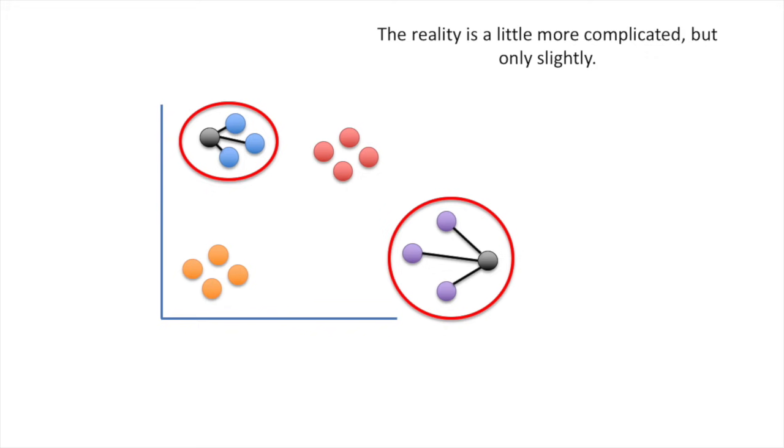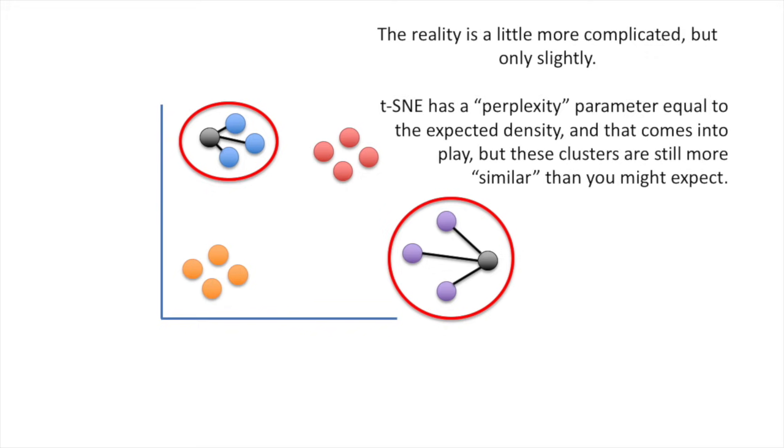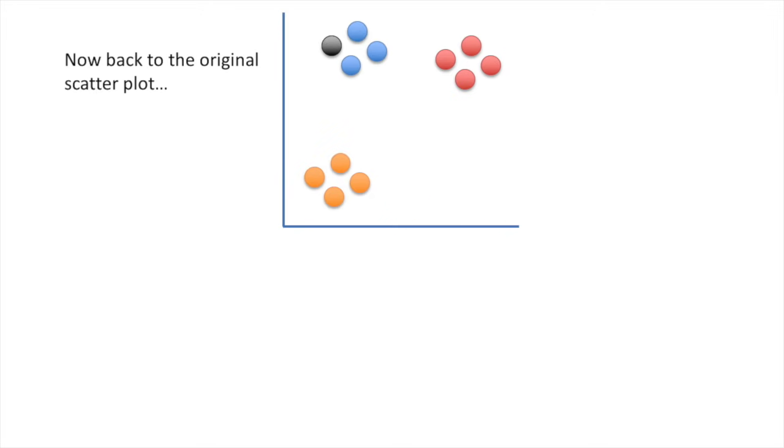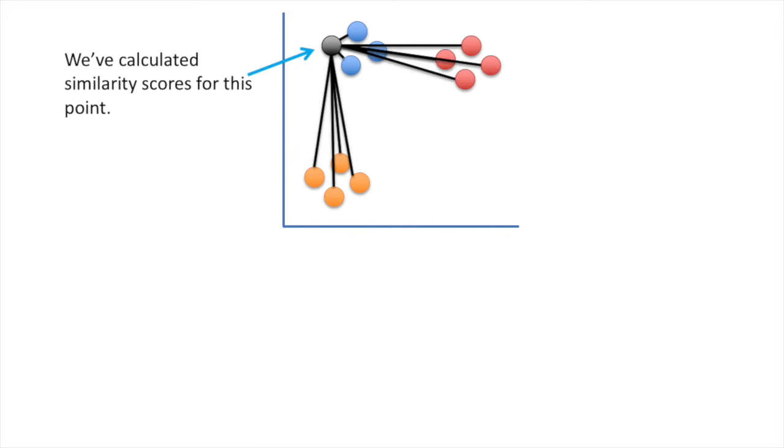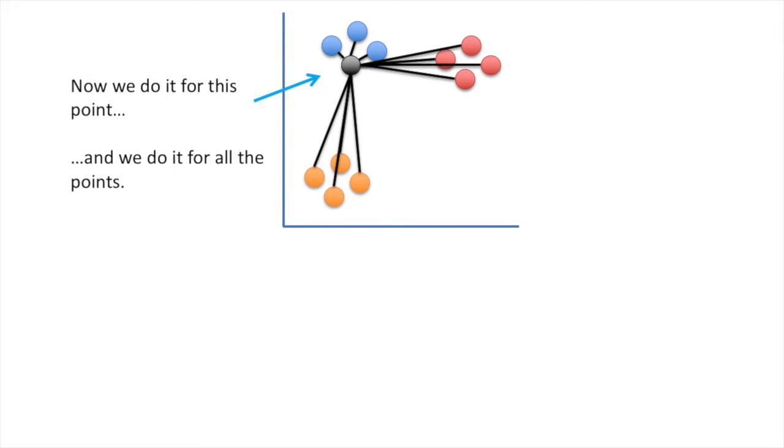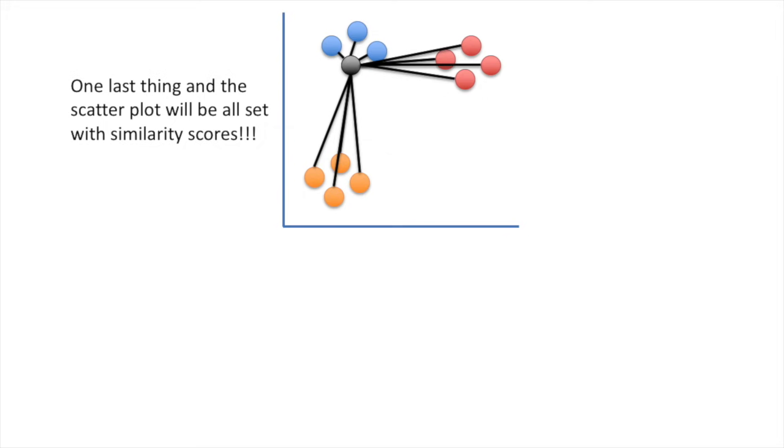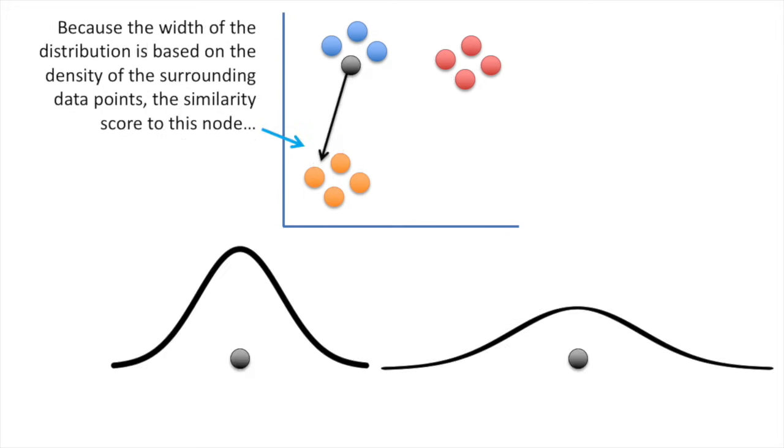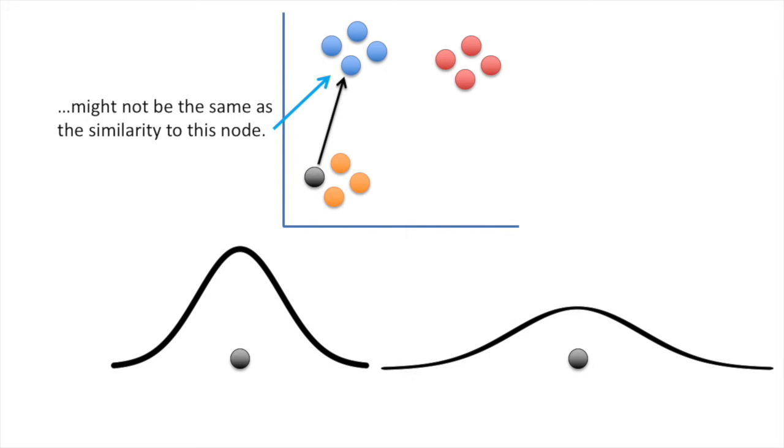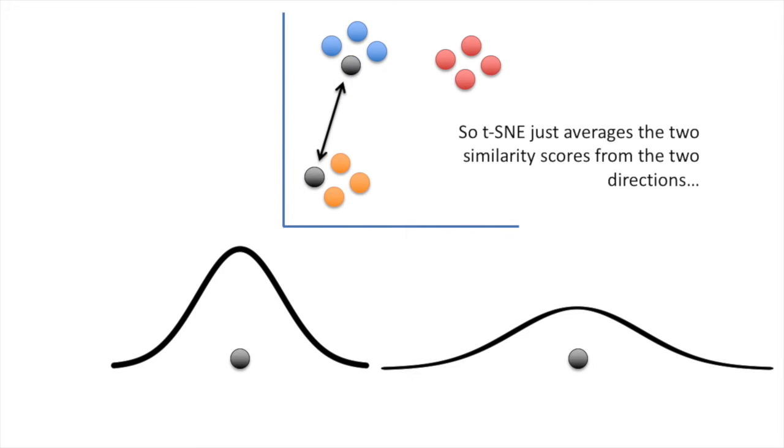That implies that the scaled similarity scores for this relatively tight cluster are the same for this relatively loose cluster. The reality is a little more complicated, but only slightly. t-SNE has a perplexity parameter equal to the expected density around each point, and that comes into play. But these clusters are still more similar than you might expect. Now back to the original scatterplot. We've calculated similarity scores for this point. Now we do it for this point. And we do it for all the points. One last thing, and the scatterplot will be all set with similarity scores. Because the width of the distribution is based on the density of the surrounding data points, the similarity score for this node might not be the same as the similarity to this node. So t-SNE just averages the two similarity scores from the two directions. No big deal.